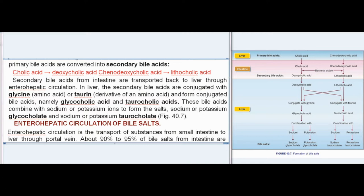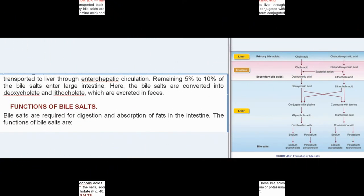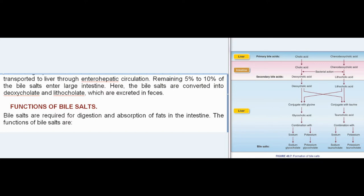Enterohepatic circulation is the transport of substances from the small intestine to the liver through the portal vein. About 90% to 95% of bile salts from the intestine are transported to the liver through enterohepatic circulation. The remaining 5% to 10% of bile salts enter the large intestine, where they are converted into deoxycholate and lithocholate, which are excreted in feces.